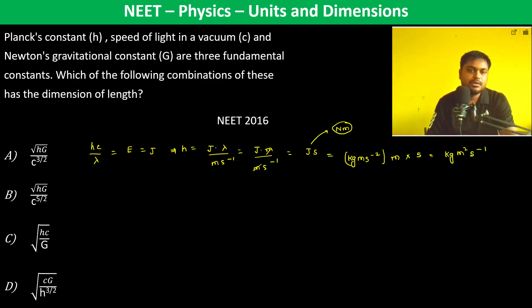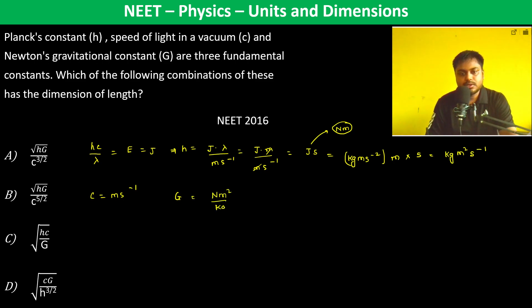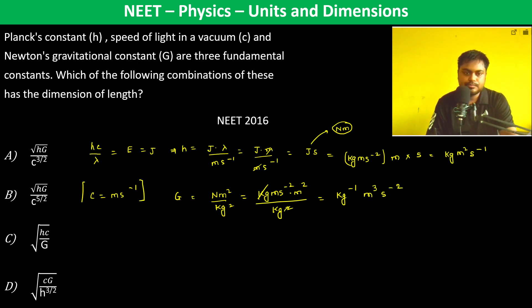Now speed of light in a vacuum: C is m·s⁻¹. And G is Newton·m² per kg², so therefore kg·m·s⁻² times m² divided by kg², giving kg⁻¹·m³·s⁻².